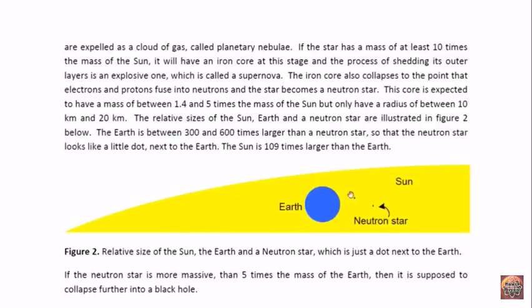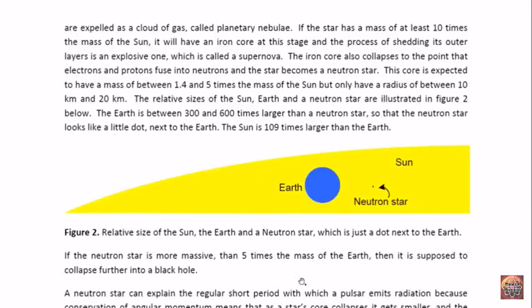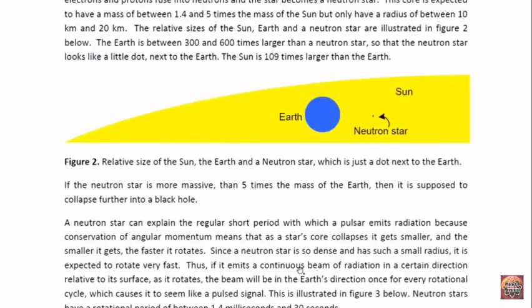And this is illustrated here. If this is the Sun, this would be the Earth. The Sun is 100 times the size of the Earth. And this would be the neutron star. It's just a little dot in comparison with the Earth. The Earth is between 300 and 600 times larger than a neutron star. So the neutron star would just look like a little dot. The Sun is 109 times larger than the Earth. So this is the size comparison. Now, if the neutron star is more massive than 5 times the mass of the Earth, then it's supposed to collapse into a black hole.